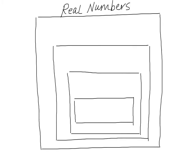The integers are part of our real number system. The real numbers start with what we call the natural numbers. Natural numbers are our counting numbers — the ones that start with 1, 2, 3, and go on from there. The next set is the whole numbers. Whole numbers take those natural numbers and add 0 to it.